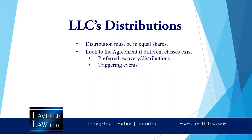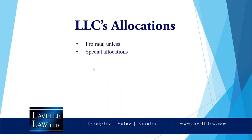LLCs are taxed like partnerships. You could have different classes of interests with distributions generally in equal shares unless different classes exist. Tax attribute allocations could be pro-rata or set as special allocations under Internal Revenue Code Section 704(b). You can own 50-50 of a business with your partners, and yet the early losses could be allocated 90% to one member until the business turns around. These special allocations require very specific drafting, but they're a major advantage LLCs and partnerships offer that corporations do not.